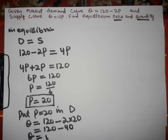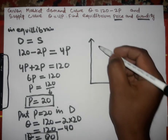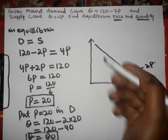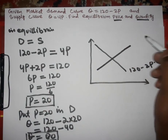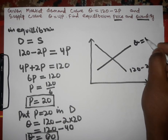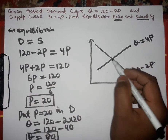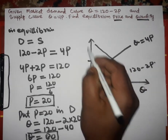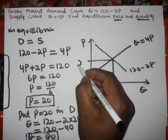This becomes 120 - 40, so Q = 80. That is our equilibrium quantity. Graphically, if we have the graph of these two functions, the demand curve Q = 120 - 2P slopes downward because of the negative sign, and the supply curve is Q = 4P. At the intersection point where D = S, the equilibrium quantity is 80 on the quantity axis and the equilibrium price is 20 on the price axis.